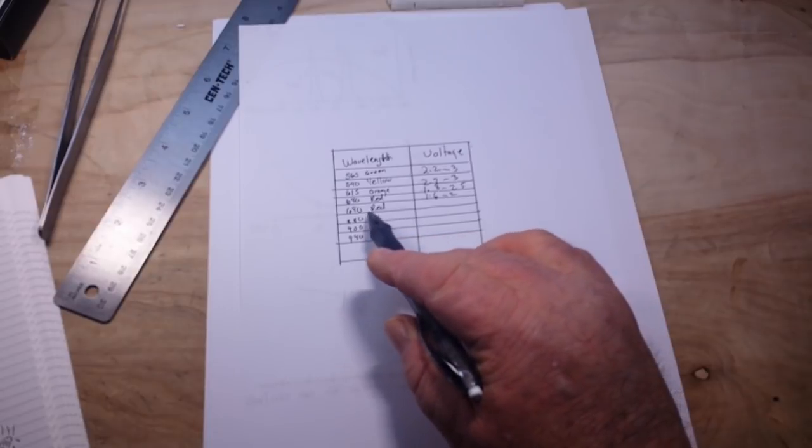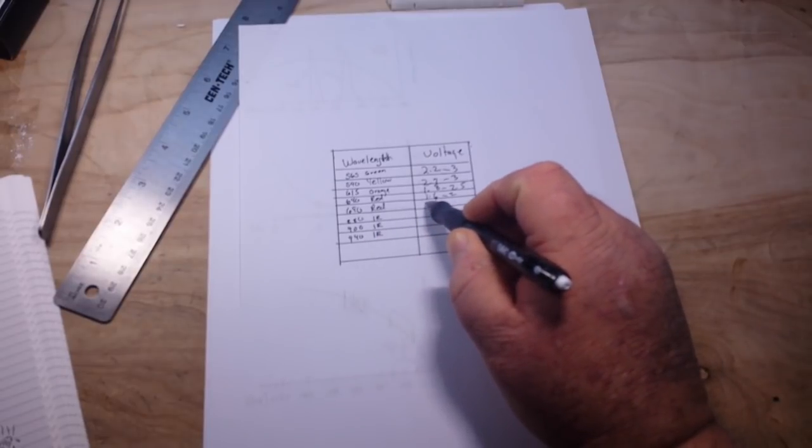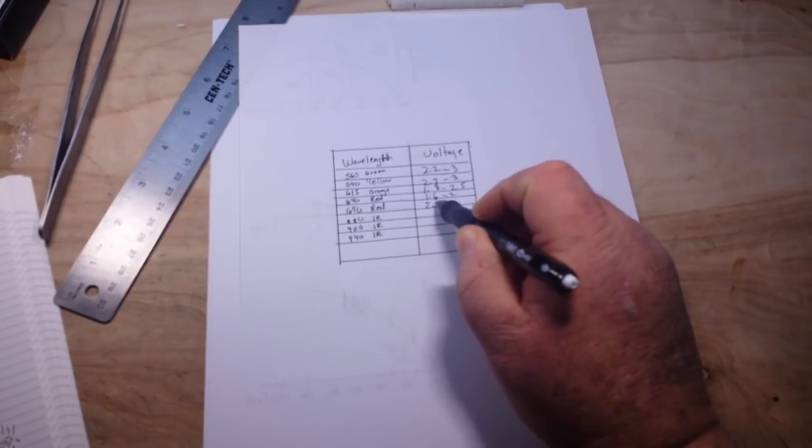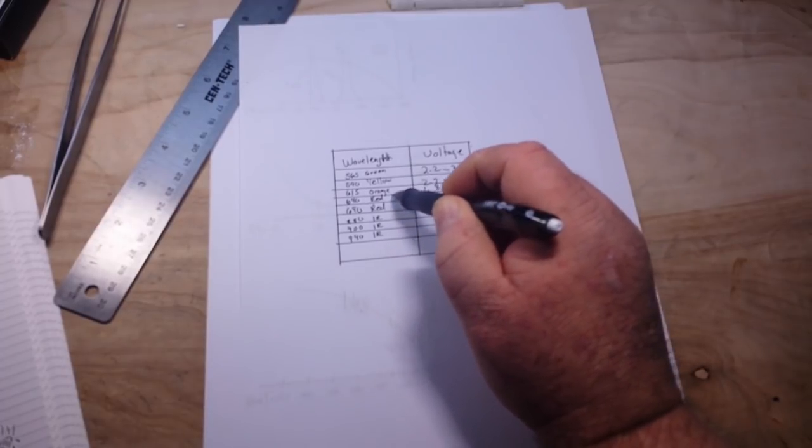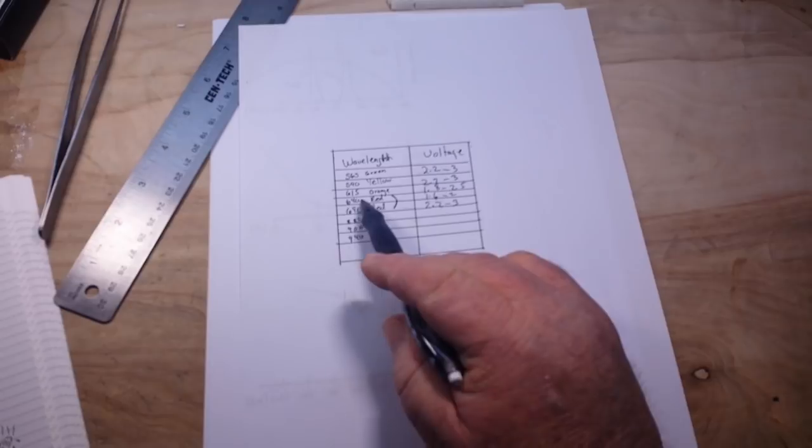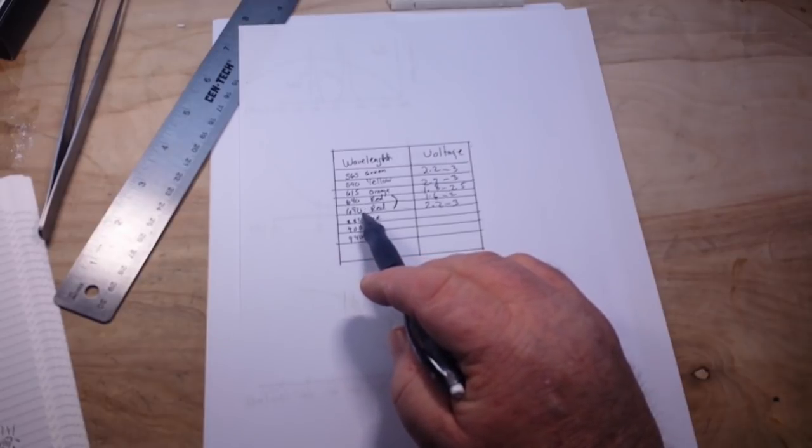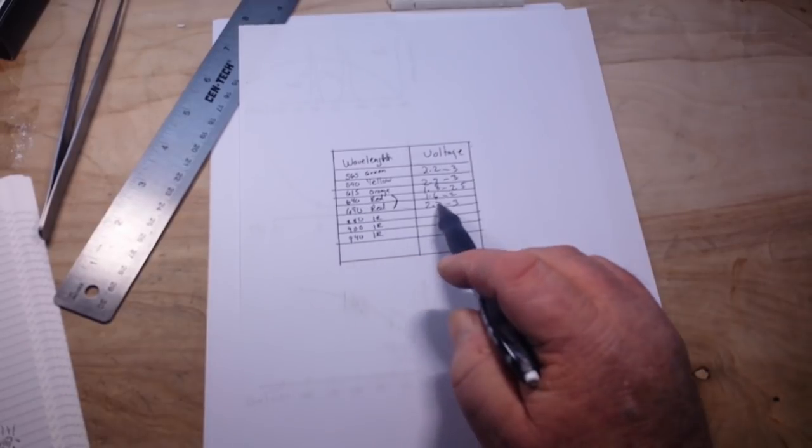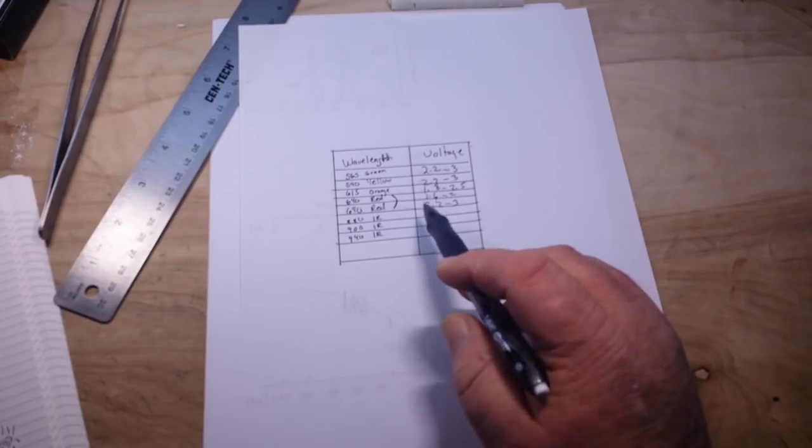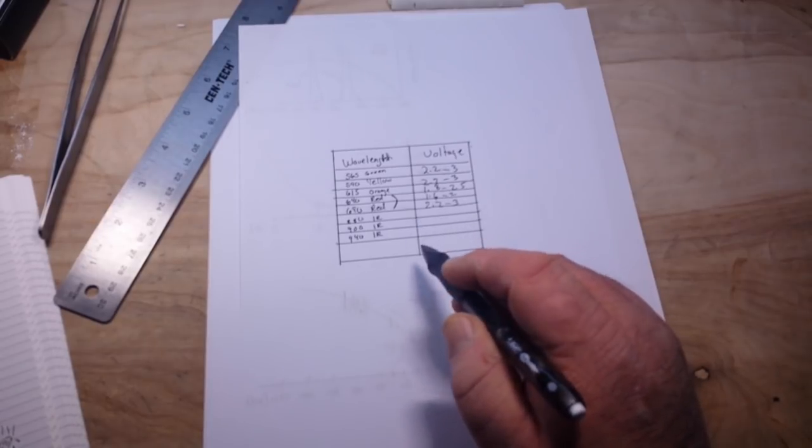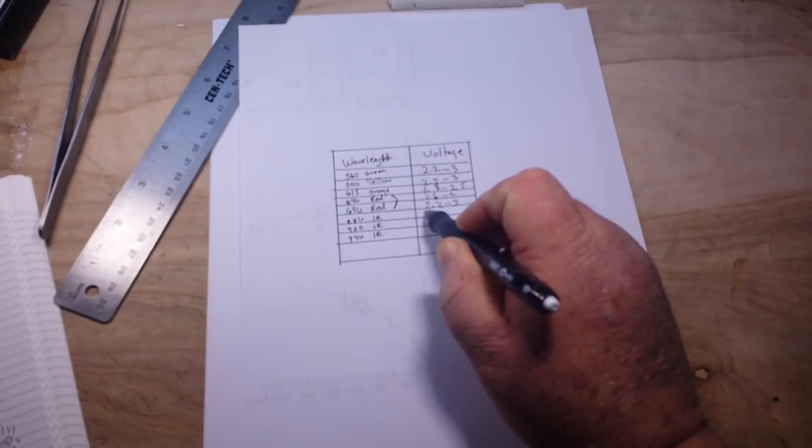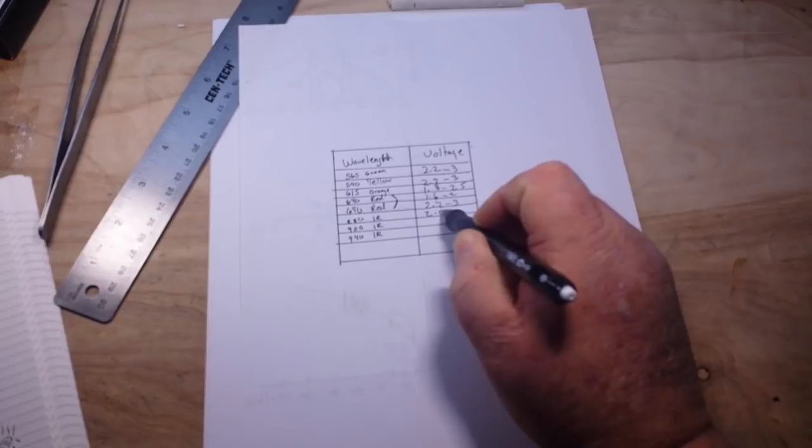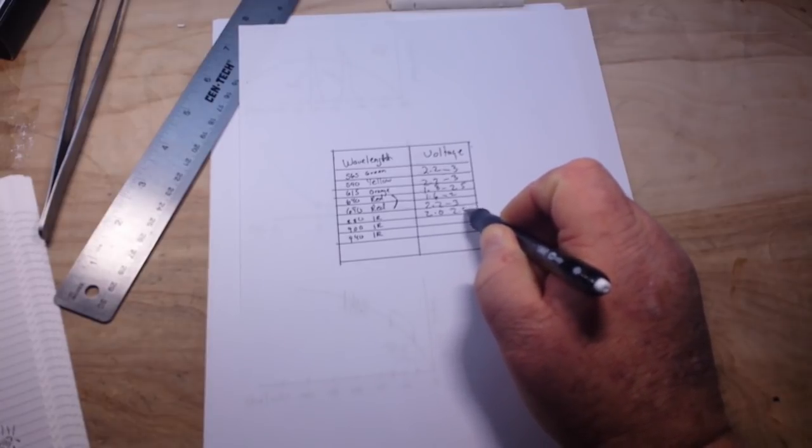Now when we get up into the 690 nanometer red, we're back up to about that 2.2 to 3 volt range. See, there's a shift between the 640 nanometer and the 690 nanometer in the amount of voltage it's going to take to get them to conduct. And then when we get in the IR, things get a little bit different. 880, which is a low IR, is going to conduct about 2 volts to 2.5.